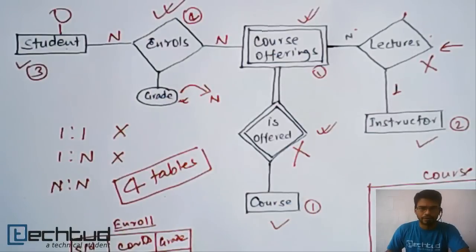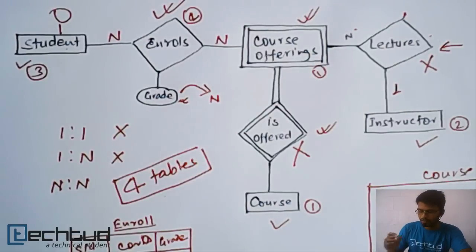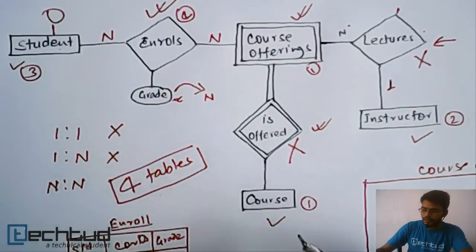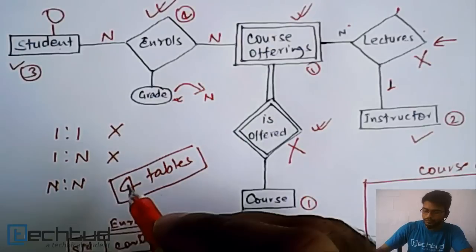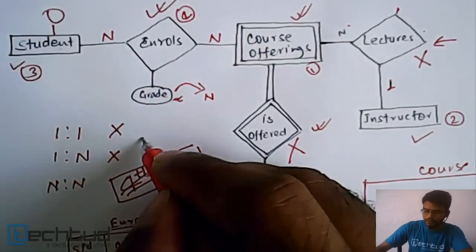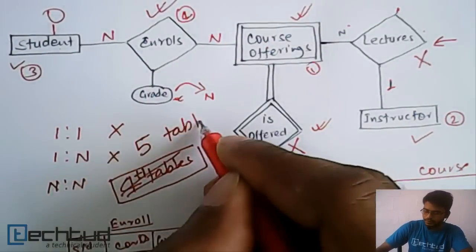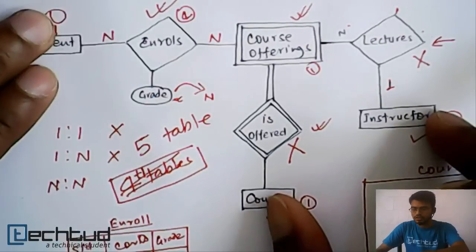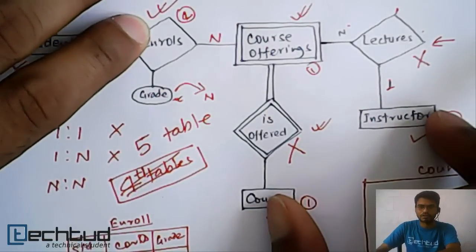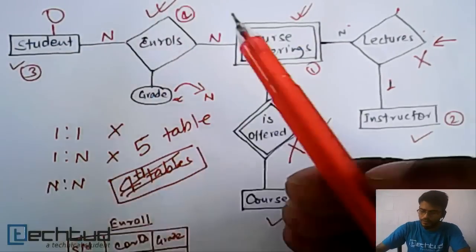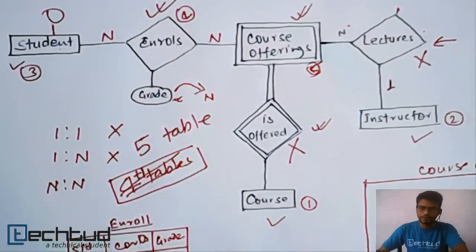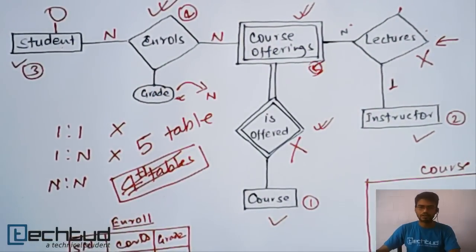So the final answer is: we need 5 tables in total. Three tables for the strong entities, one table for the weak entity, and one table for the N:N enroll relationship. This is how we store the entire ER model without any data loss. I hope you understood — if you have any doubts, please ask in the doubt section. Thanks for watching.